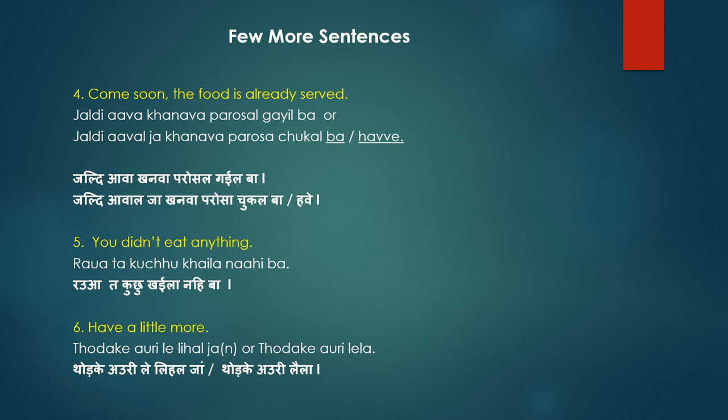The next sentence is: 'You didn't eat anything' — this is what a concerned mother or host says. In Bhojpuri: 'Rawa to khanava khanava nahi khaile.' 'Rawa' is the respectful 'you,' and the phrase means you didn't eat anything.